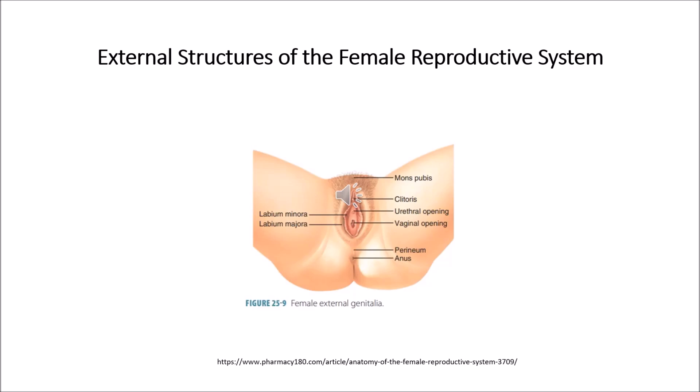Next is the uterus. The uterus is a hollow, pear-shaped organ that is the home to the developing fetus. The uterus is divided into two parts: the cervix, which is the lower part that opens into the vagina, and the main body of the uterus called the corpus. The corpus can easily expand to hold a developing baby. A canal through the cervix allows sperm to enter and menstrual blood to exit.